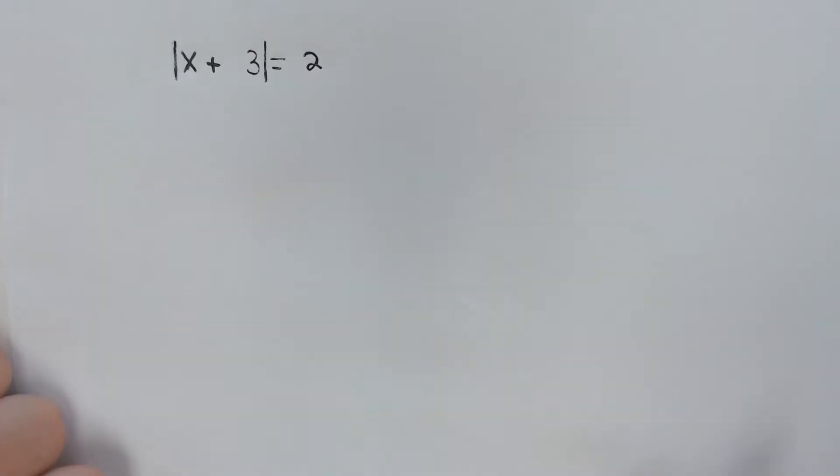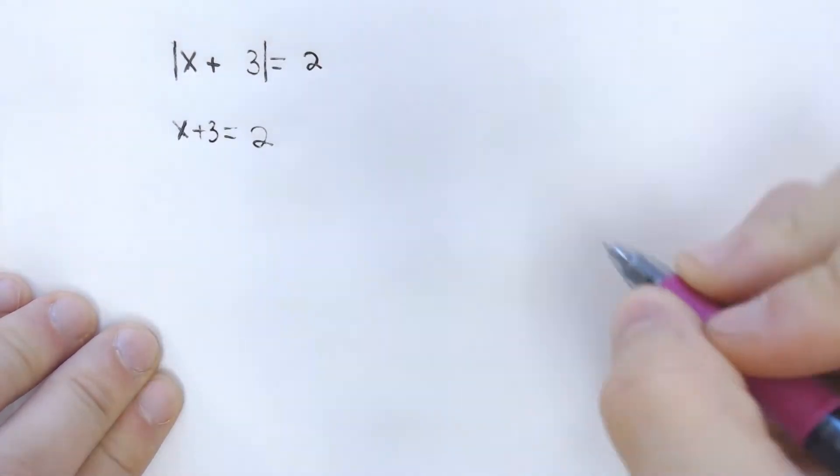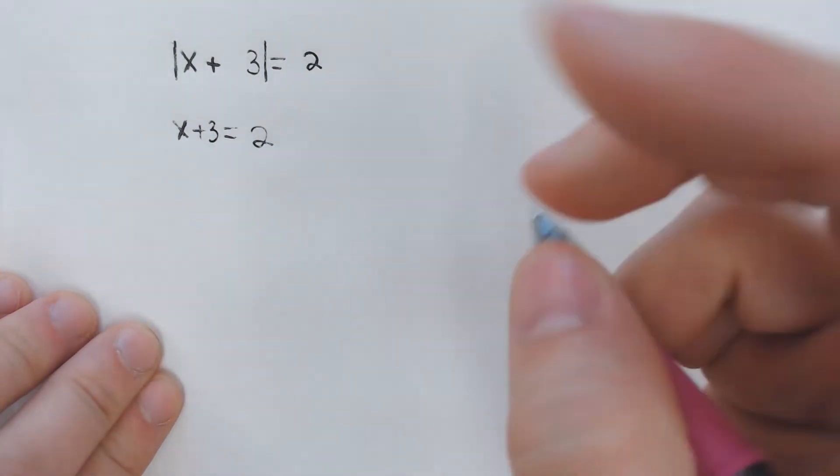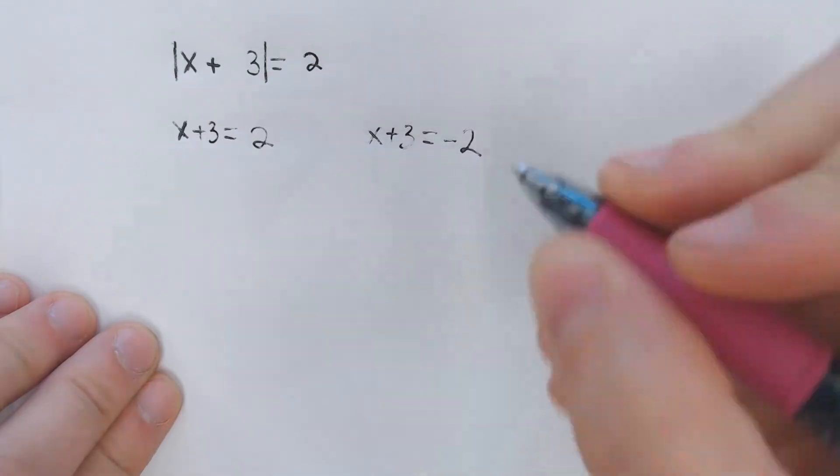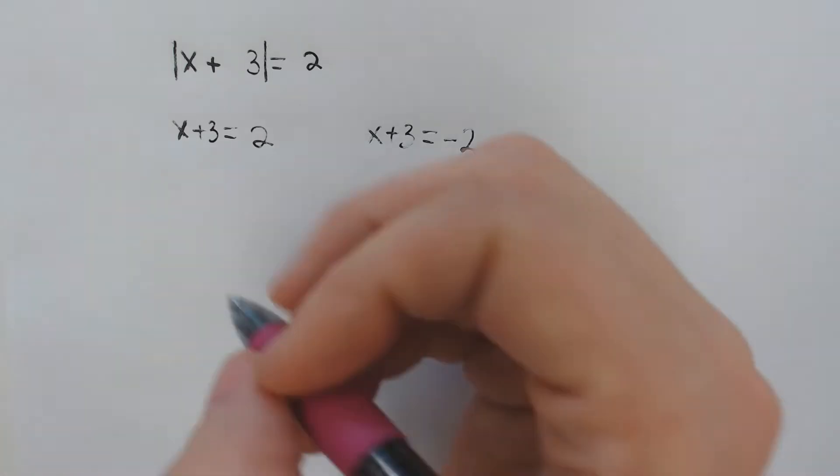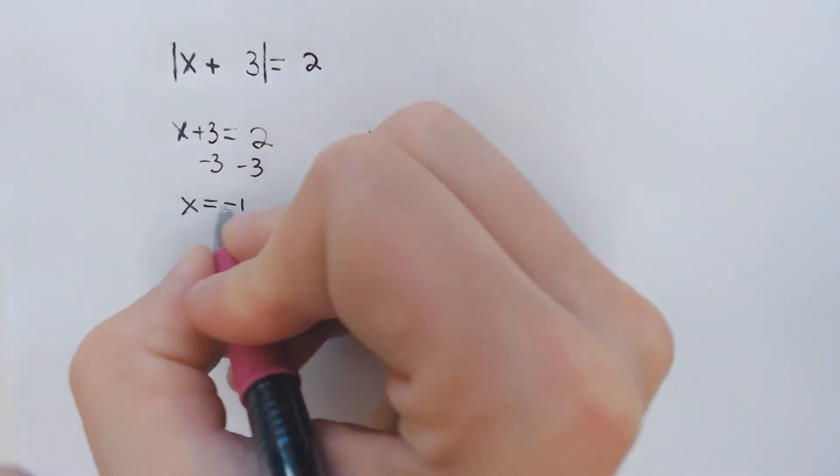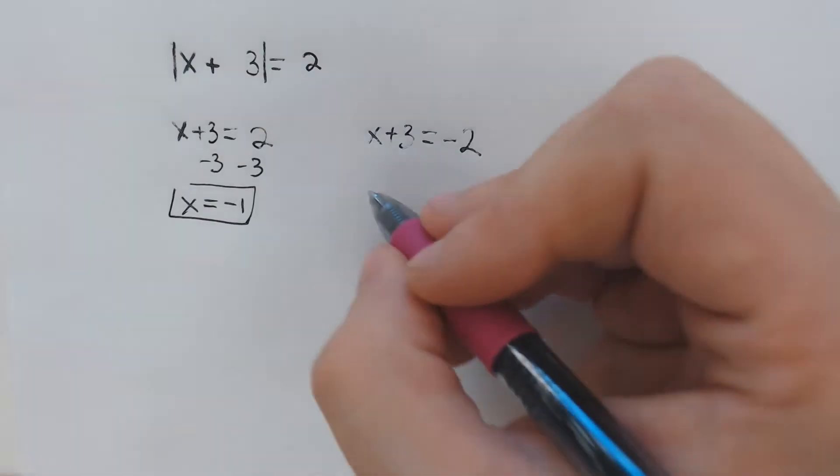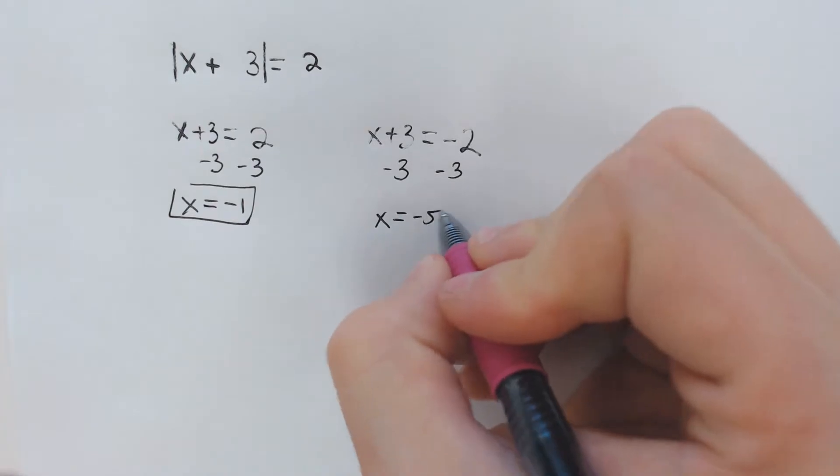If they are isolated, then you will just set x plus 3 equal to 2, a positive 2, and x plus 3 equals negative 2, and you're just going to solve both of those. We're going to subtract 3 and get x equals negative 1, and subtract 3 and get x equals negative 5.